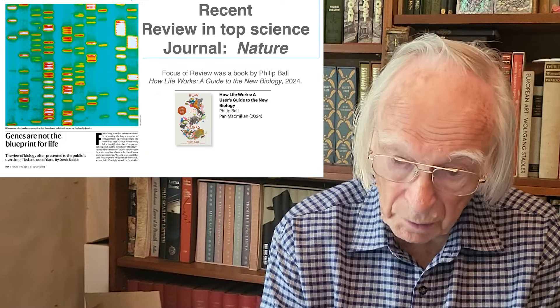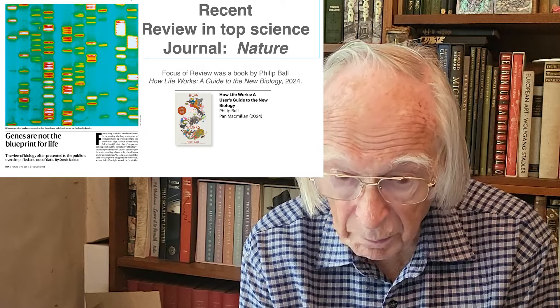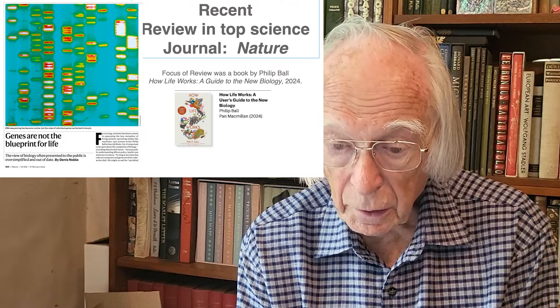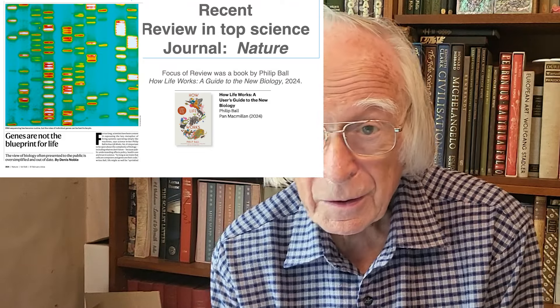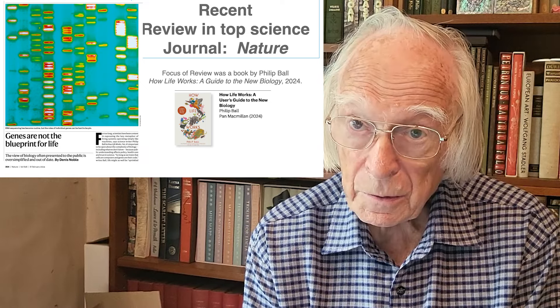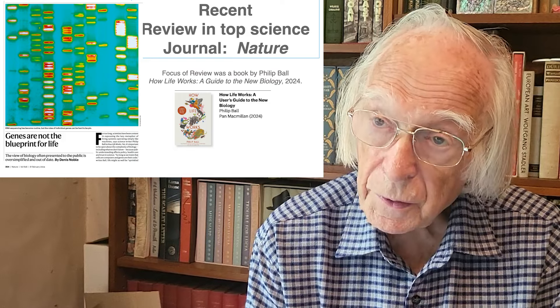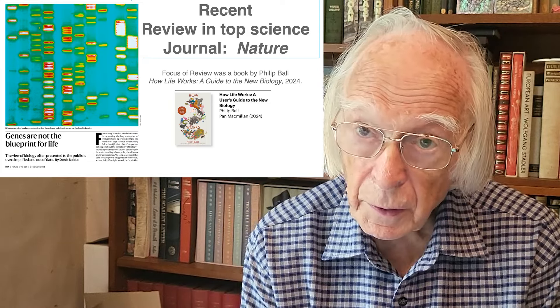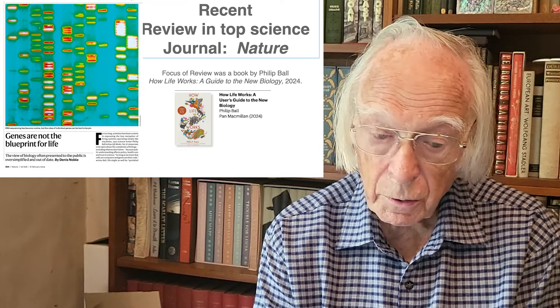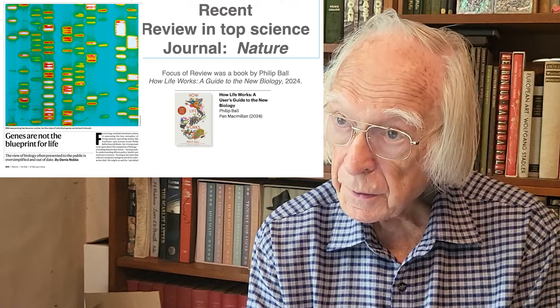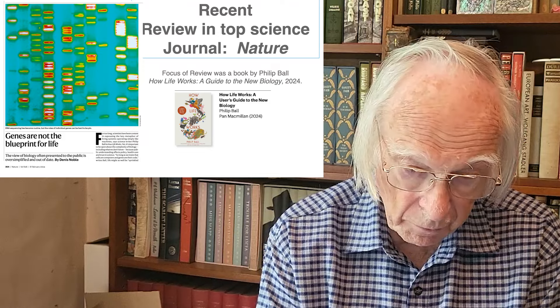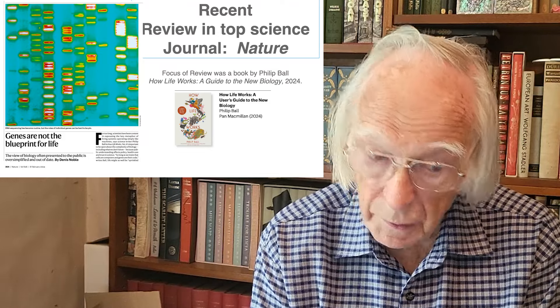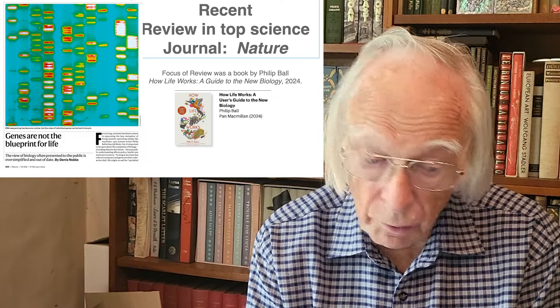An interesting book published by science journalist Philip Ball just this year — How Life Works: A Guide to the New Biology — that title gives the game away. This is a new biology because it rejects the major textbook accounts of the evolutionary process. Philip Ball identifies in great detail the various processes by which organisms are so clever at organizing themselves and coping with all kinds of environmental changes that it's wrong to think of genes as the blueprint for life. The view of biology often presented to the public is oversimplified and badly out of date.